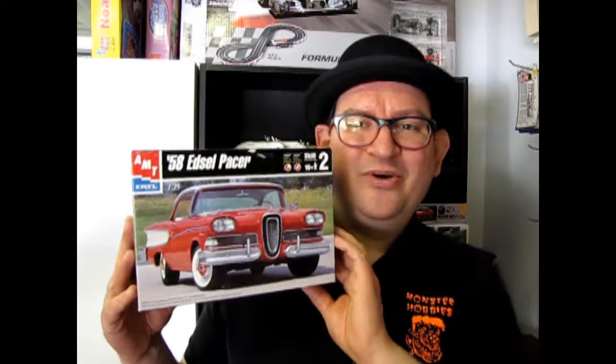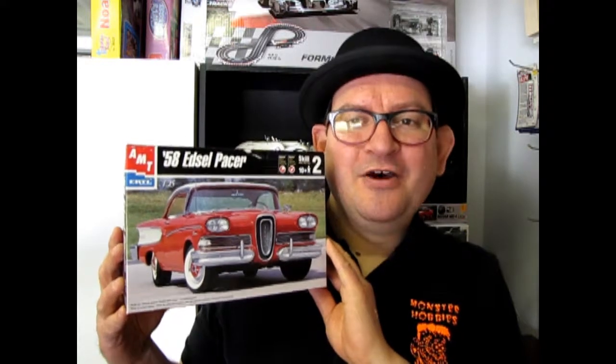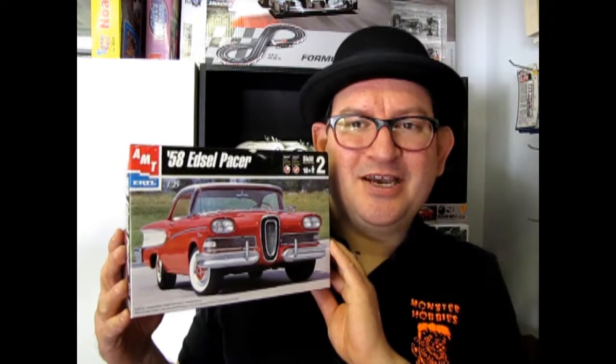Well here we go, the 1958 Ford Edsel Pacer, voted one of the worst cars in history, which is kind of sad because the reason why it was the worst car is because Ford released it on the market just a little too fast. It was also voted one of the ugliest cars because of this horseshoe radiator.